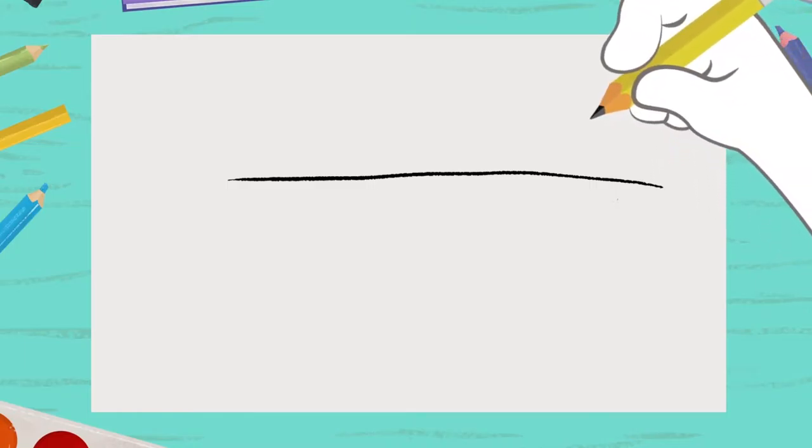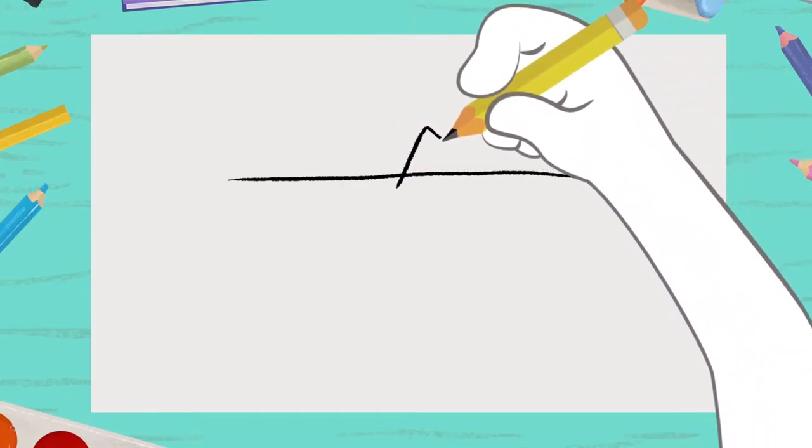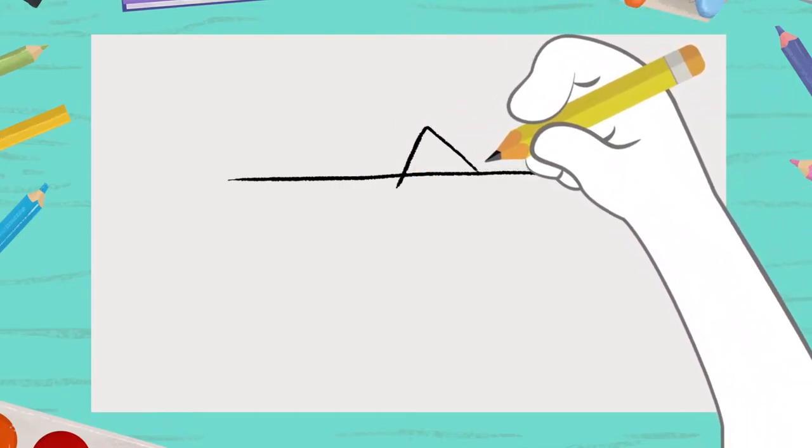Just around the center of the line, you draw a triangle, like this. This is called a fin.